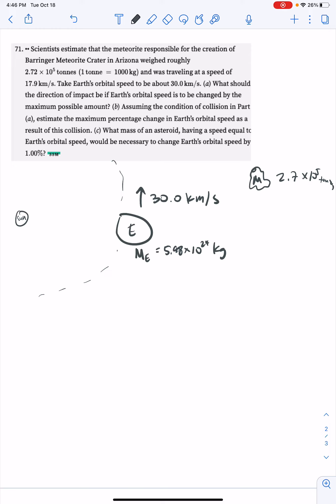So it's going to be an inelastic collision, a perfectly inelastic collision. And in order for it to maximally change the speed, it should come in directly opposite the direction of the Earth.